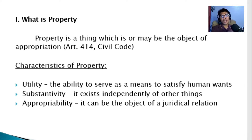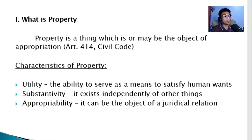What is property? Article 414 of the Civil Code defines property as a thing which is or may be the object of appropriation. To appropriate means to make one's own. In other words, a property is a thing that can be owned — whether open to public or private ownership, or a thing with no known owner — if it is capable of being owned, then that thing is property.